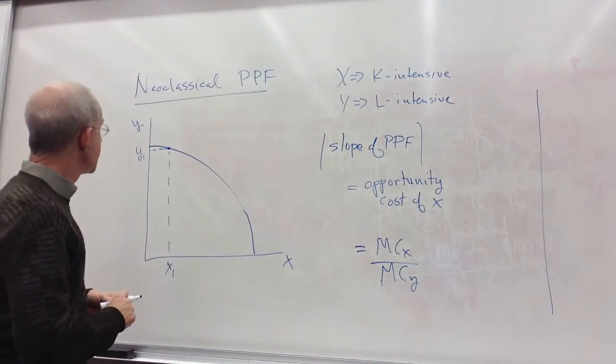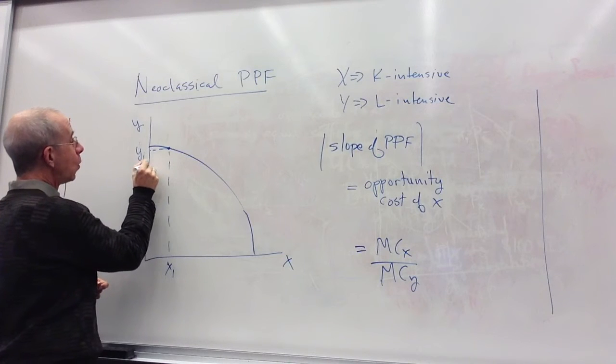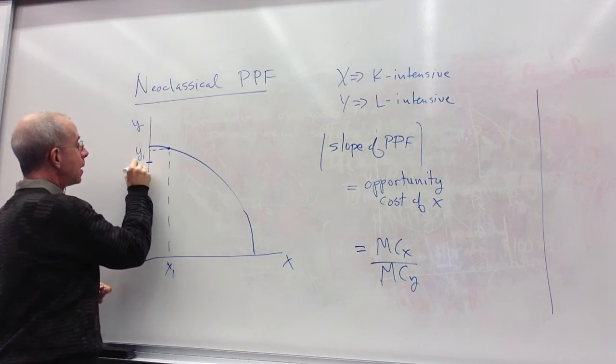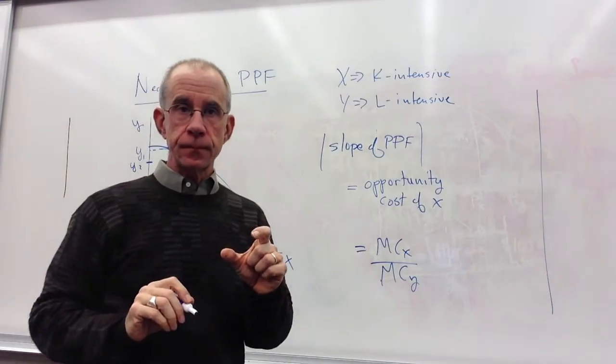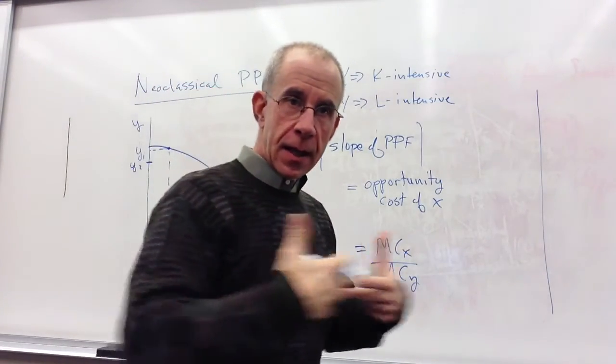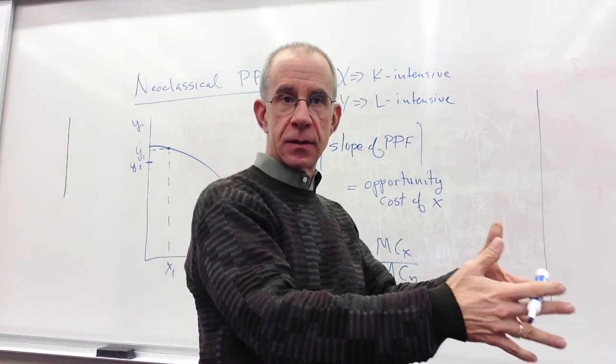So these two industries really want to use labor and capital in different proportions. And let's imagine that you reduce the production of Y, one unit.